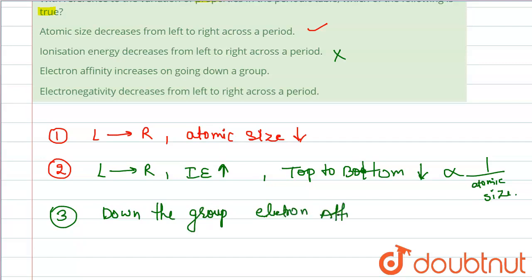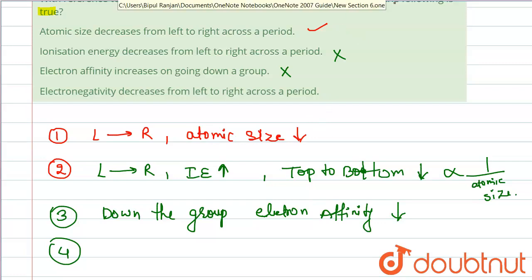So electron affinity decreases down the group. The statement that it increases is false. The fourth option is saying that electronegativity decreases from left to right across a period. Electronegativity is basically a measure of the ability of an atom in a bond to attract electrons to itself.